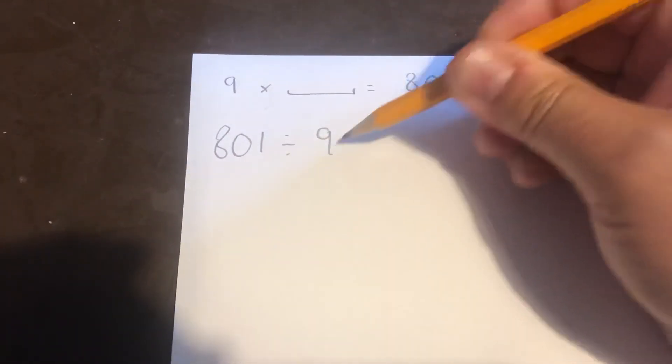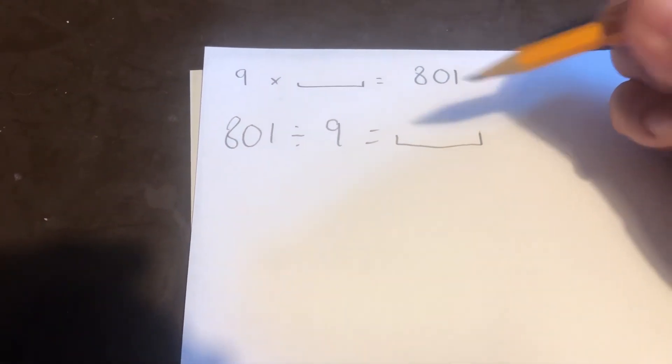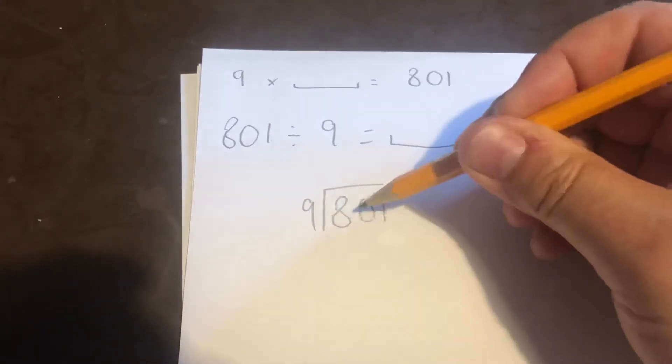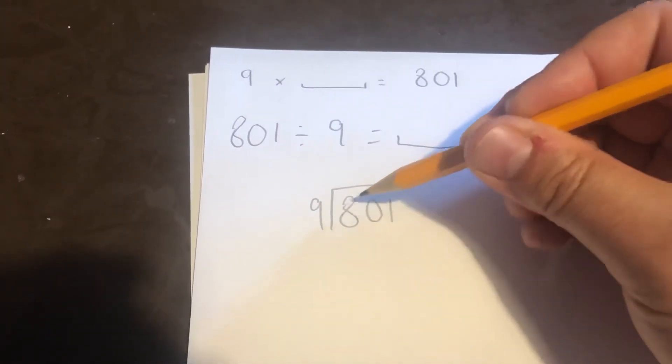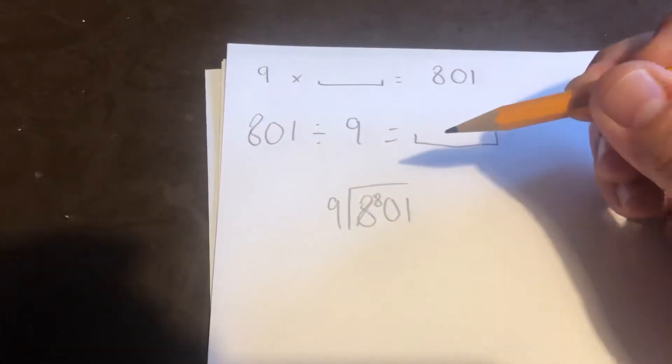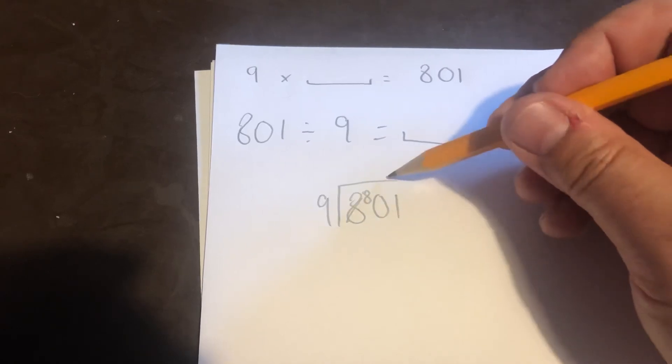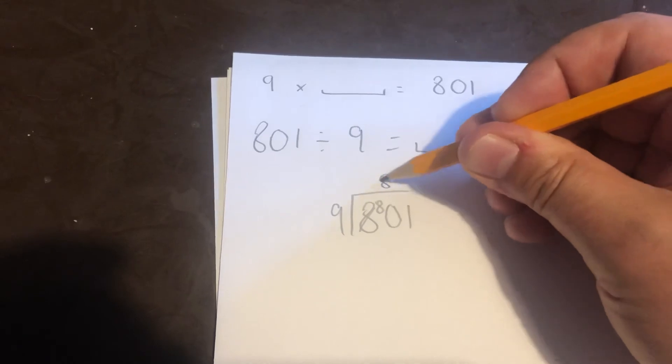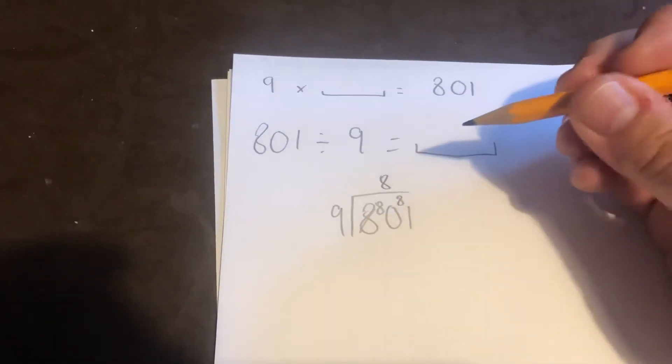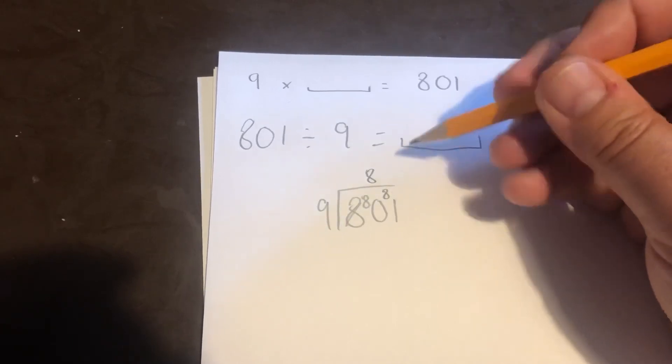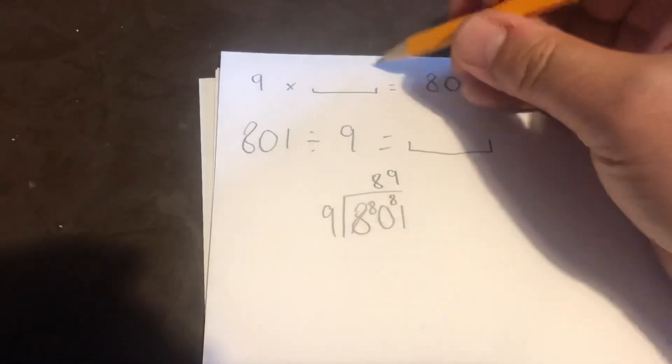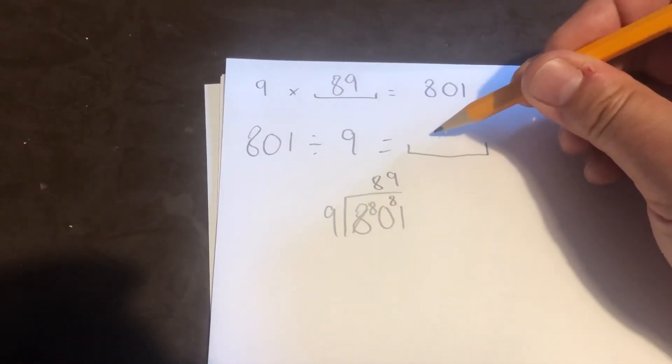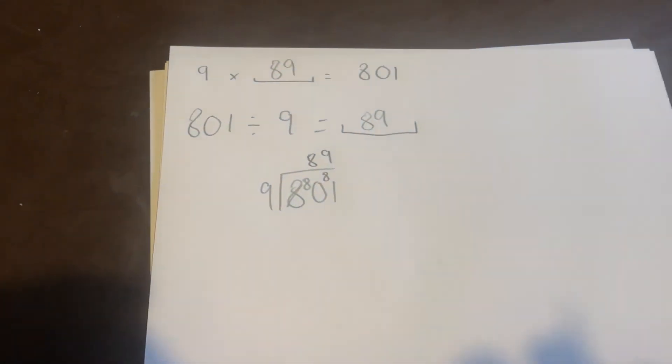801 divided by 9 equals my missing number. And to find the answer, just as before, we'll go to a bus stop. How many 9's in 8? Can't do it. So I'm going to move it across. How many 9's into 80? There are 8, which is 72. It gives me a remainder of 8. And how many 9's in 81? There are 9. So my answer is 89. 9 times 89 is 801, or 801 divided by 9 is 89. I hope that helps this week.